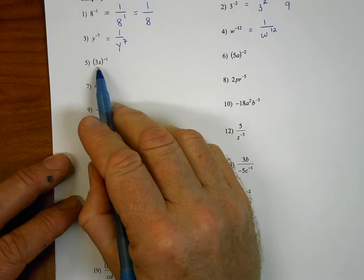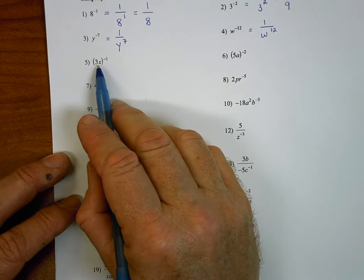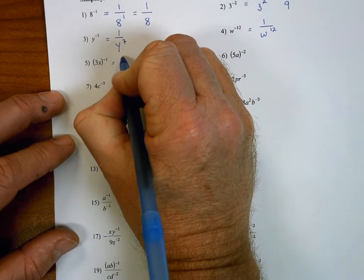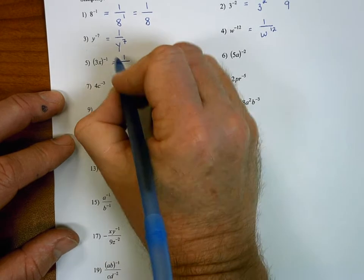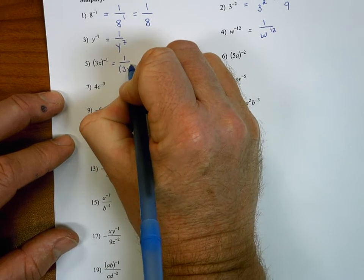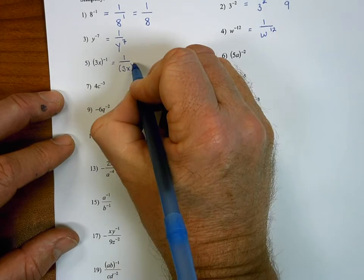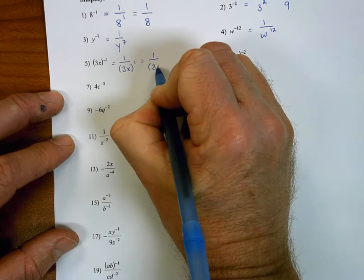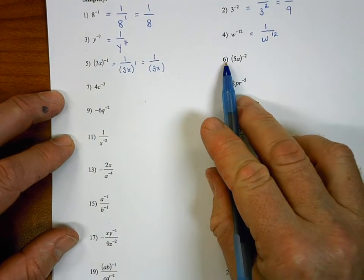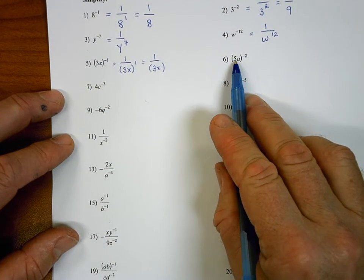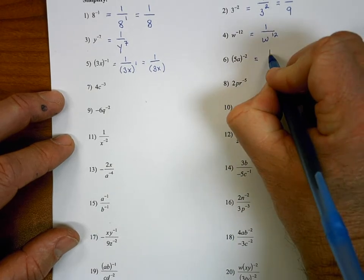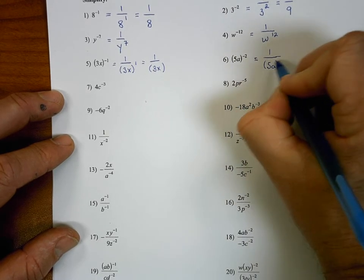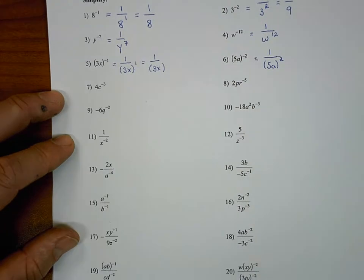For number five, notice that we have three x and the entire expression is inside the parentheses, so the entire expression is to the negative first power. When we simplify it, the entire expression goes on the denominator and the negative one power becomes a positive one power — but it's unnecessary to write the positive one, so this simplifies to one over three x. Same idea with number six: the entire expression five a is inside the parentheses, so it moves to the denominator and the negative two power becomes a positive two power.